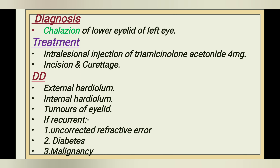Treatment options are: intralesional injection of steroids like triamcinolone acetonide 4 mg, or surgical treatment — incision and curettage. Differential diagnosis includes external hordeolum, internal hordeolum, or tumors of the eyelid. If recurrence occurs, differential diagnosis could include uncorrected refractive errors, diabetes, and malignancies.